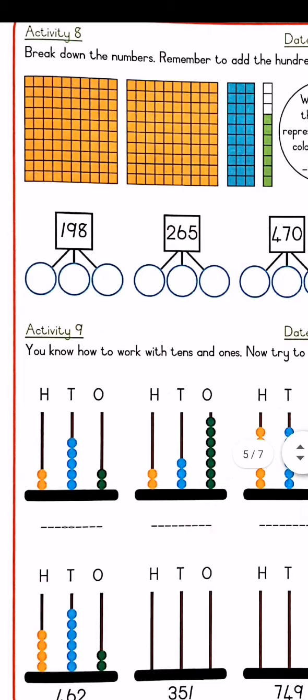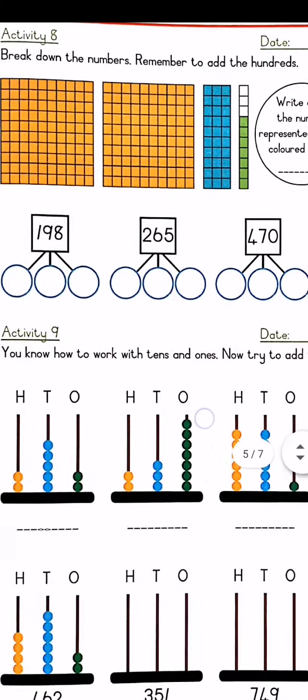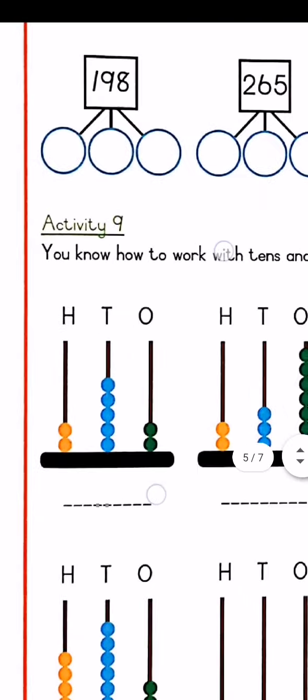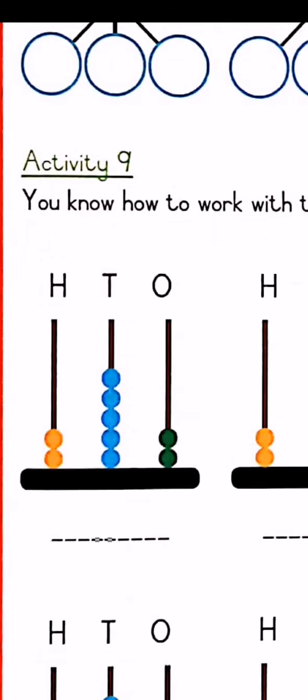Activity 9. You know how to work with 10s and 1s. Now try to add the 100s. So if you look at this first abacus with the beads, how many beads are under the 100s? How many orange beads? 2. So that will be 200. Then the 10s ones are in the middle. They are blue. So there's 10, 20, 30, 40, 50. And then the green beads are your 1s, 1, 2.